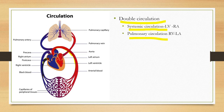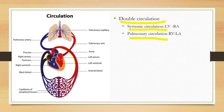In rabbits, there are two pre-caval veins. Both drain into the right auricle. The pulmonary circulation starts from the right ventricle. It carries deoxygenated blood to the lungs where oxidation happens. After oxygenation, the blood is carried back to the left auricle through the pulmonary veins.